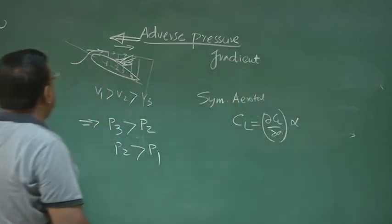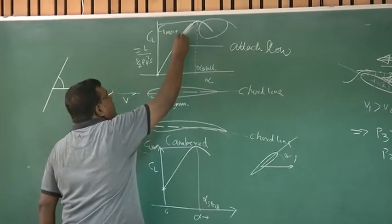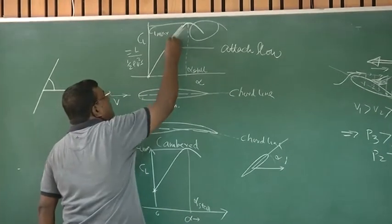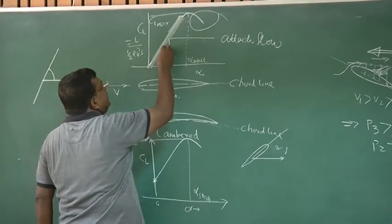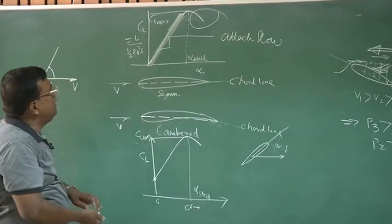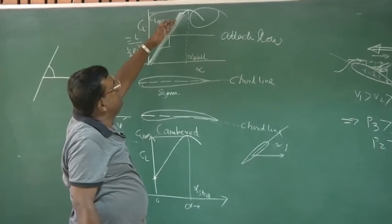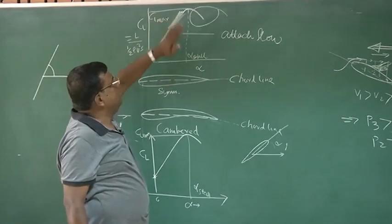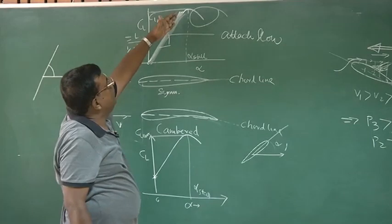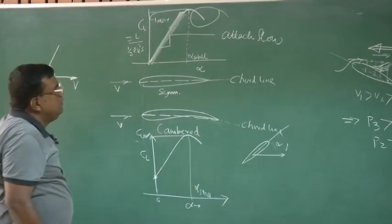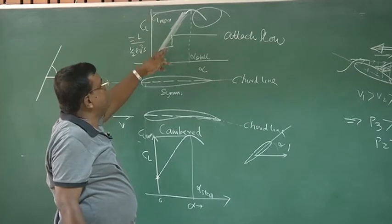What is dCL/dα? Because it is almost a linear straight line, this is a slope. In practice, we find that beyond 6–7 degrees, some sort of non-linearity comes. But assuming up to that point this is straight, I can write CL as the slope of this line multiplied by alpha.